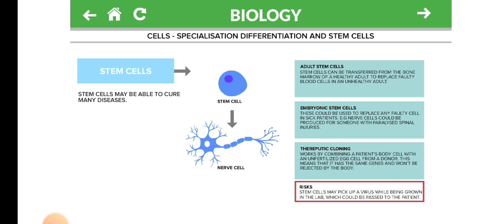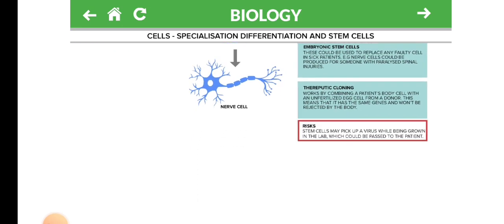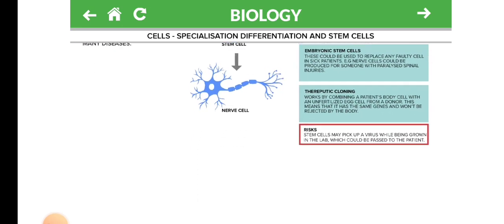Therapeutic cloning works by combining a patient's body cells with an unfertilized egg cell from a donor. This means that it has the same genes and won't be rejected by the body. Risk: stem cells may pick up a virus while being grown in the lab, which could be passed to the patient.